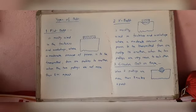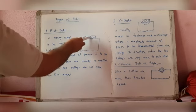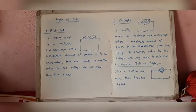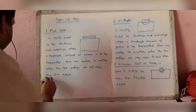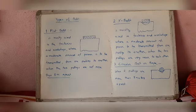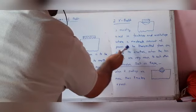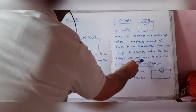Next are the types of belt. First is the flat belt, which is mostly used in factories and workshops where a moderate amount of power is to be transmitted from one pulley to another when the two pulleys are not more than 8 meters apart. The second type is the V-belt, mostly used in factories and workshops where the two pulleys are very near to each other.